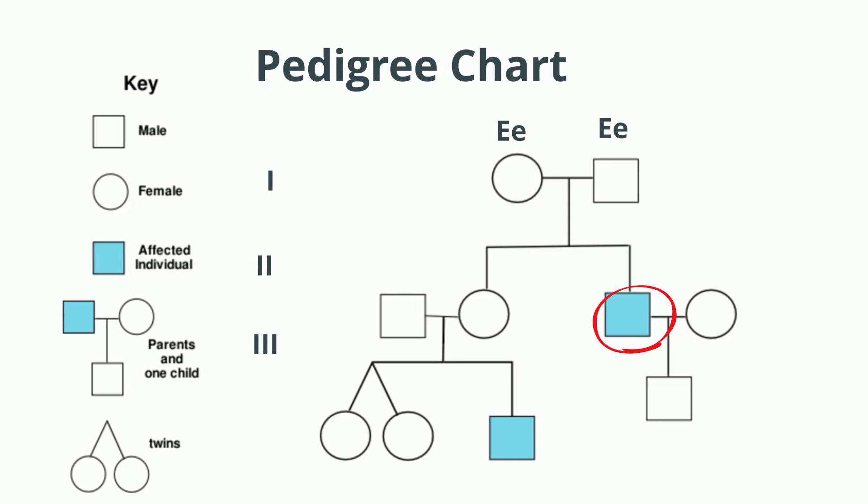So then the female from Generation 1 to Generation 2 could be heterozygous, big E little e. Then the male in Generation 2 would be little e little e. Therefore, since it's a recessive trait, it has the trait.